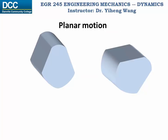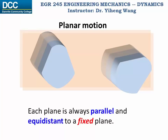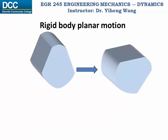Planar motion means that during motion the path of any given particle in this rigid body is limited in a plane, and these planes are parallel to each other. Also, each plane is always parallel to a fixed plane, and it remains at the same distance to this fixed plane.